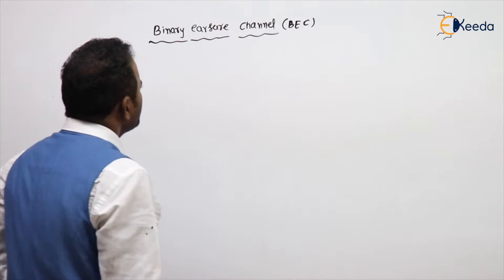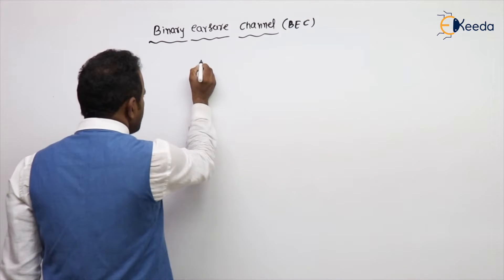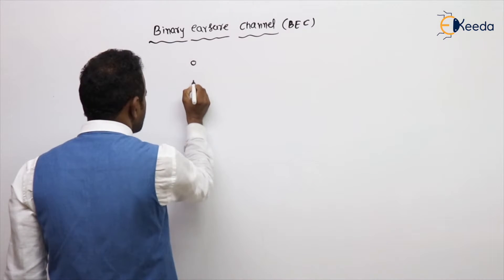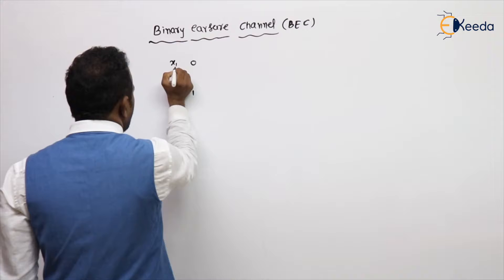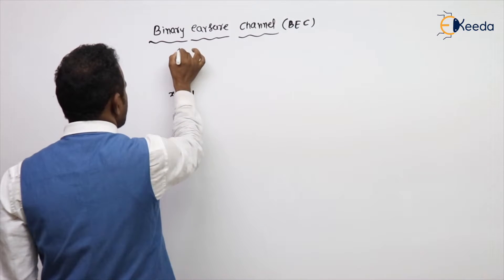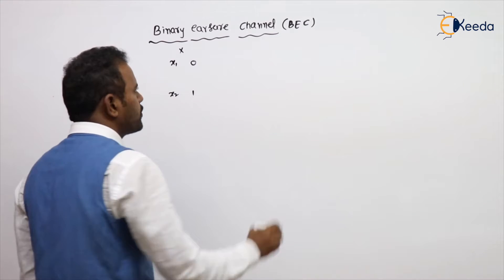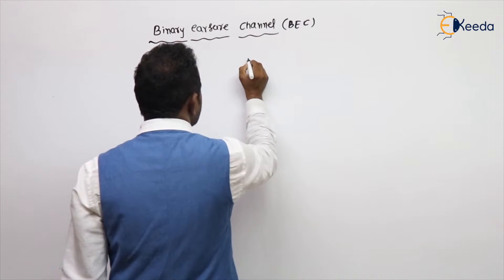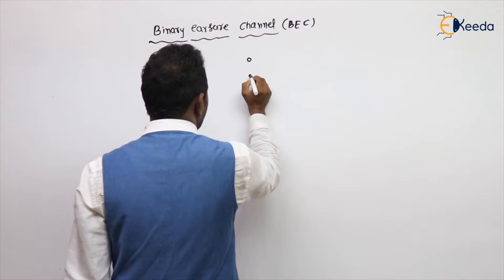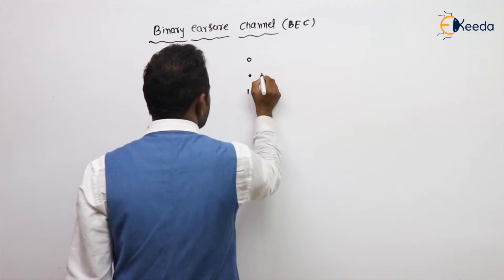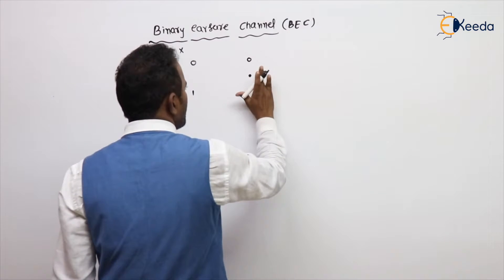What is this Binary Erasure Channel? First I will write the Channel Diagram so we get some clarity. It has two input symbols — let's take 0 and 1, or x1 and x2 on the input side — but it has three outputs. The three outputs are: 0, 1, and a middle symbol we'll call y.